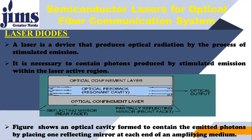Stimulated emission means you have multiple emissions — a high intensity of radiation — that come in the category of stimulated emissions. Laser Diode is no doubt more advanced compared to Light Emitting Diodes. It is necessary to contain photons produced by stimulated emission within the laser active region. In Laser Diode, photons are produced by stimulated emission, whereas in LED, photons are produced by spontaneous emission. This is one of the main differences between laser diodes and LEDs.